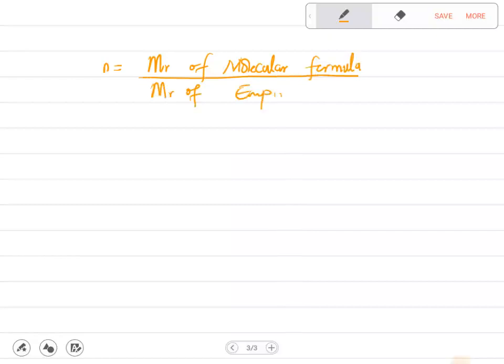Now we're going to find the ratio. We call it n. n is equal to Mr of molecular formula divided by Mr of empirical formula. We've been given 78 and here we've calculated 13, so n is equal to 6.